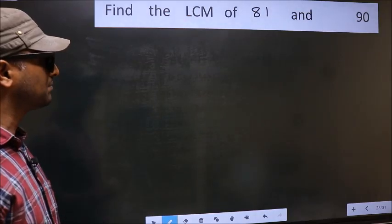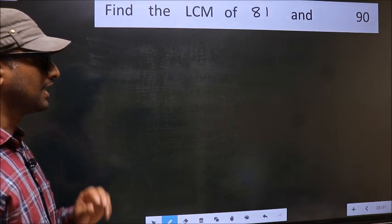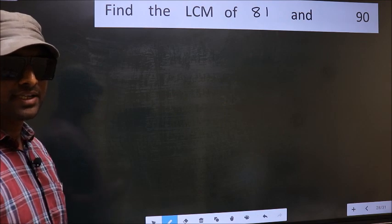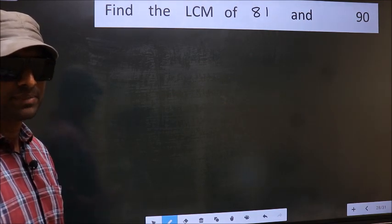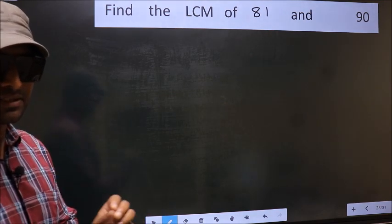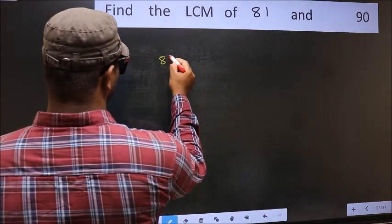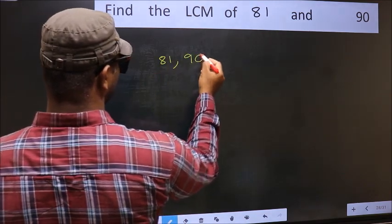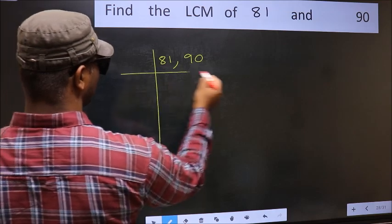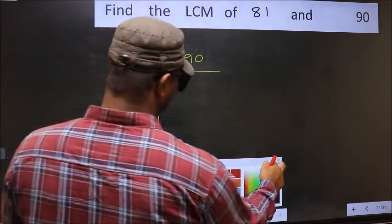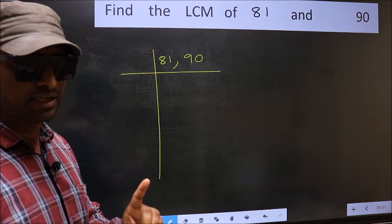Find the LCM of 81 and 90. To find the LCM, we should frame it in this way: write 81 and 90 side by side. This is step 1.